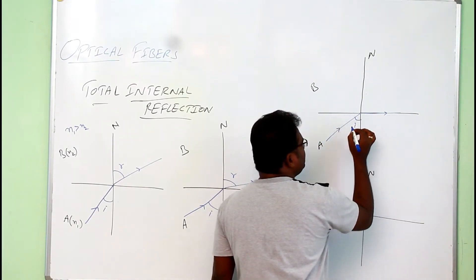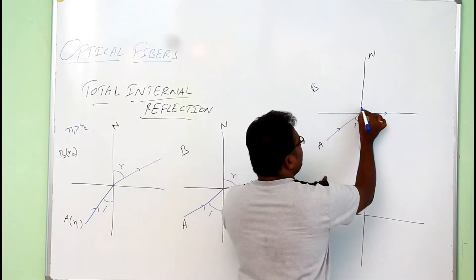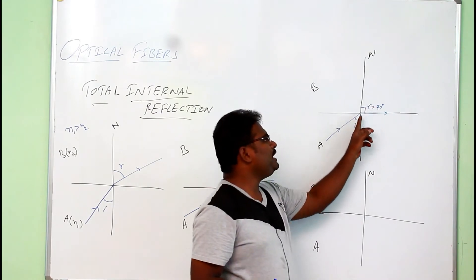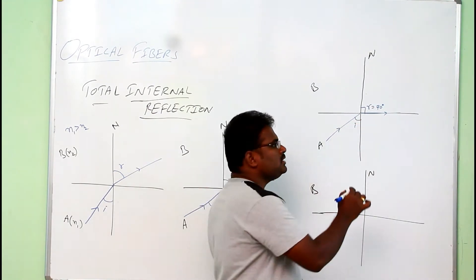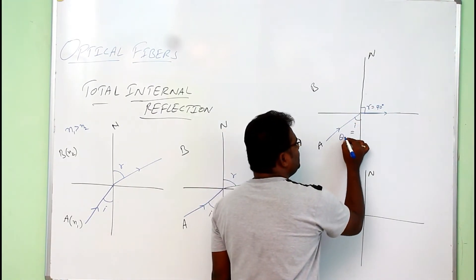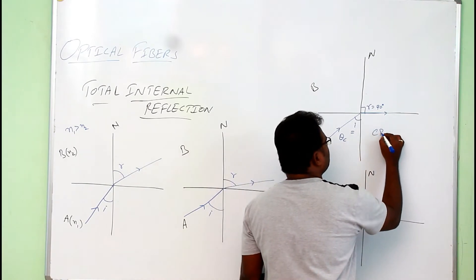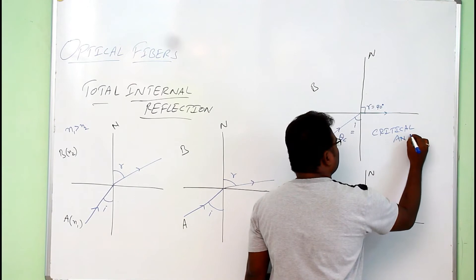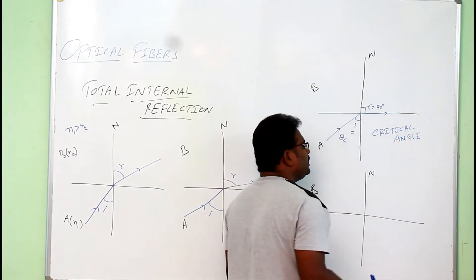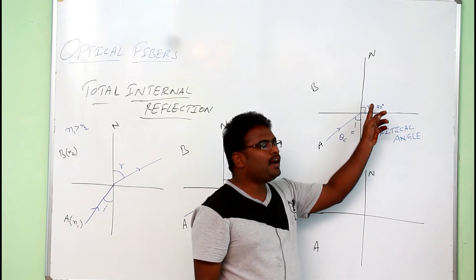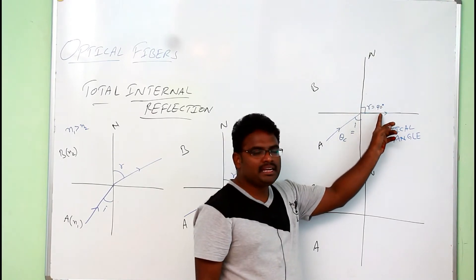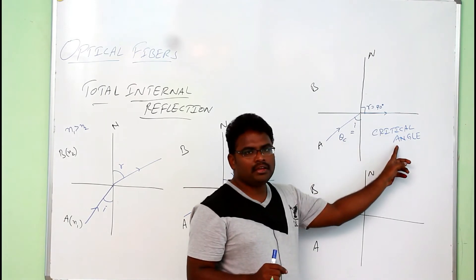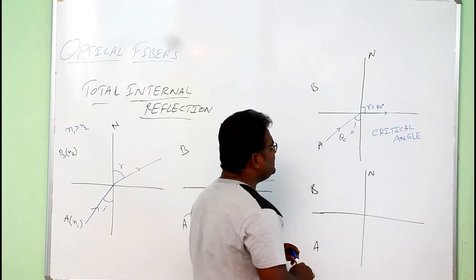At that certain angle of incidence, when the angle of refraction becomes 90 degrees, the corresponding angle of incidence is known as the critical angle, theta c. So if the angle of refraction becomes 90 degrees, the corresponding angle of incidence is known as the critical angle.